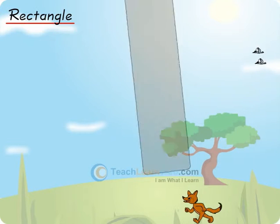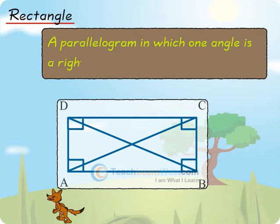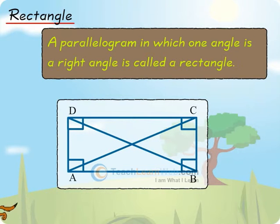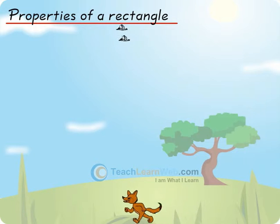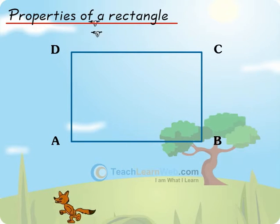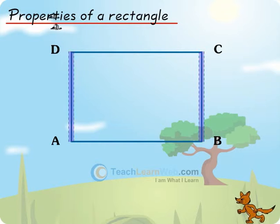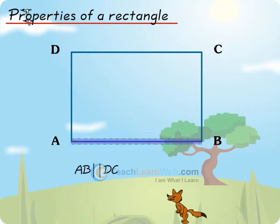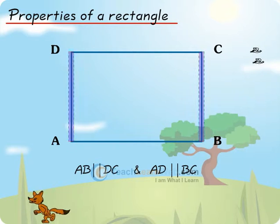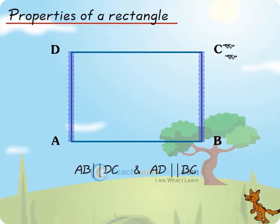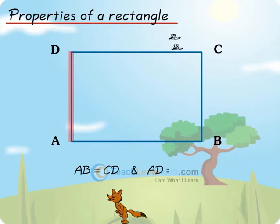A parallelogram in which one angle is a right angle is called a rectangle. Properties of a rectangle: its opposite sides are parallel, that is AB is parallel to DC and AD is parallel to BC. Its opposite sides are equal, that is AB = CD and AD = BC.